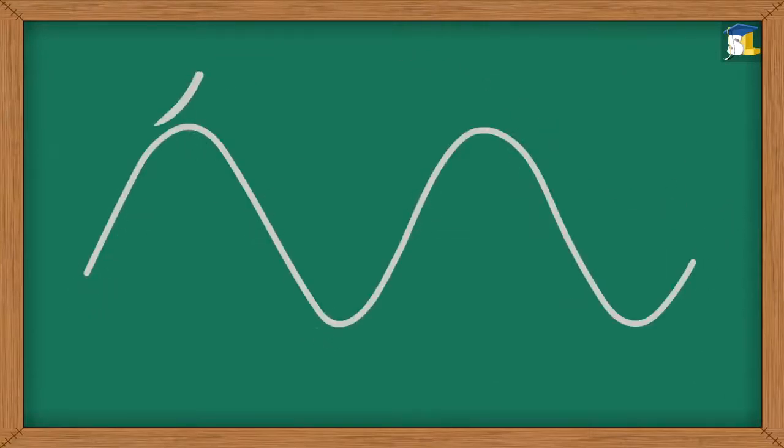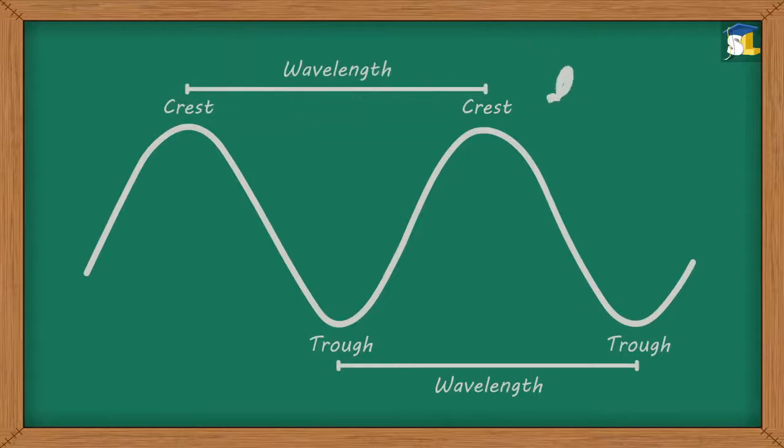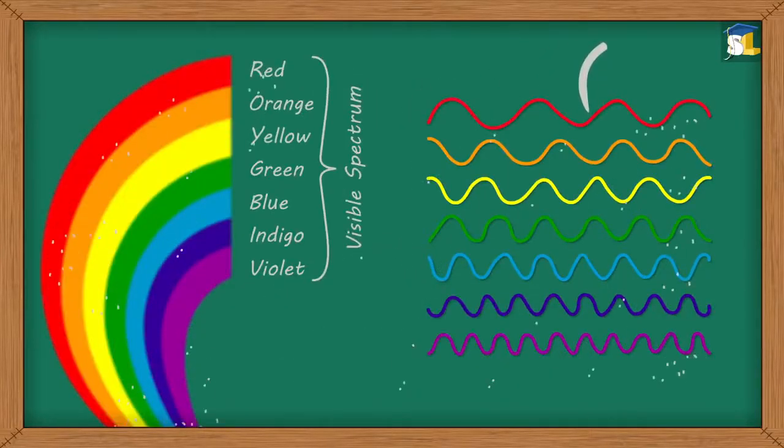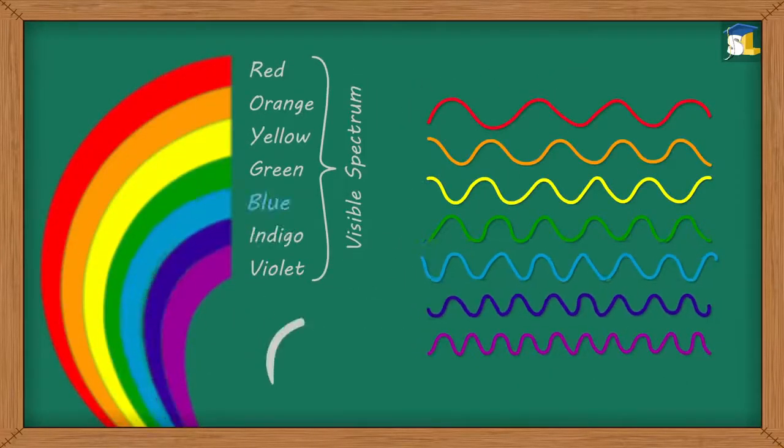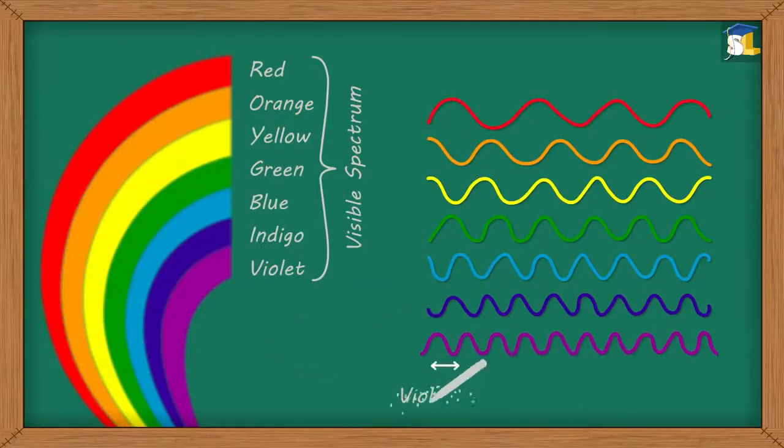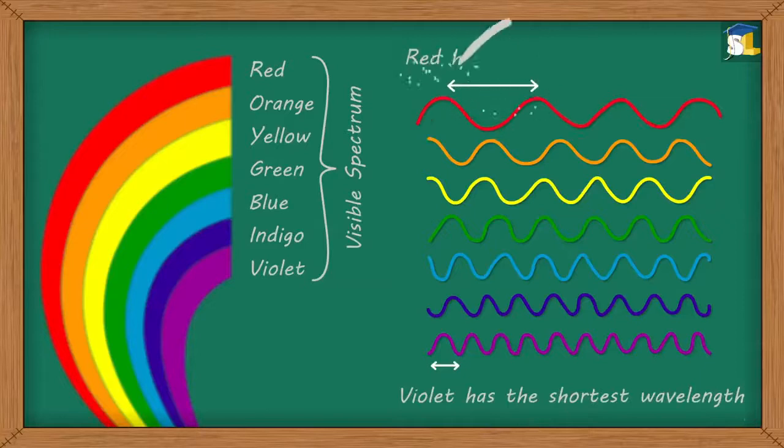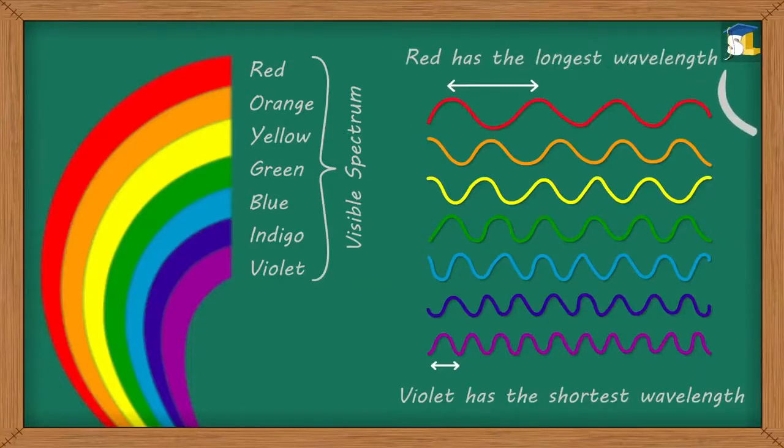Wavelength is the distance between consecutive crests or consecutive troughs in a wave. In a rainbow, as we move from violet to red, the wavelength of colors increases. Violet has the shortest wavelength, while red has the longest wavelength.